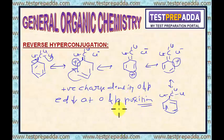My point is clear. This way we explain the decrease in electron density at ortho and para position. This is just opposite what we did in hyperconjugation. That is why this is known as reverse hyperconjugation or negative hyperconjugation.